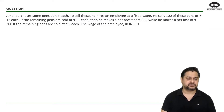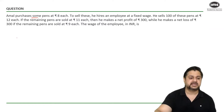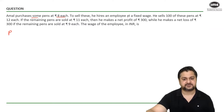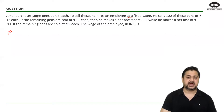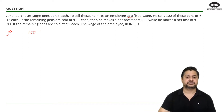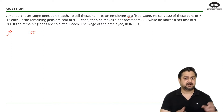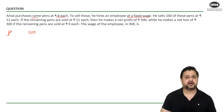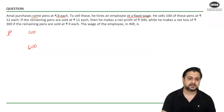The question says Amal purchases some pens at ₹8 each. Let's say he buys p pens at ₹8 per pen — that is his cost. He sells 100 of these pens at ₹12 each. So my cost per pen is ₹8 and selling price is ₹12, meaning I'm making ₹4 profit per pen. Selling 100 pens gives us 100 × 4 = ₹400 fixed profit from those 100 pens.